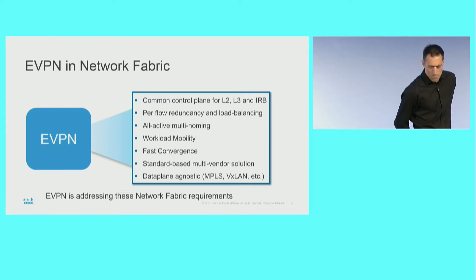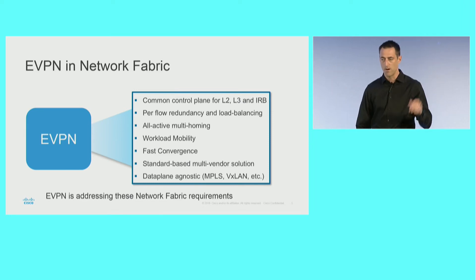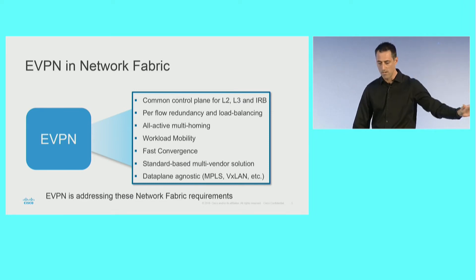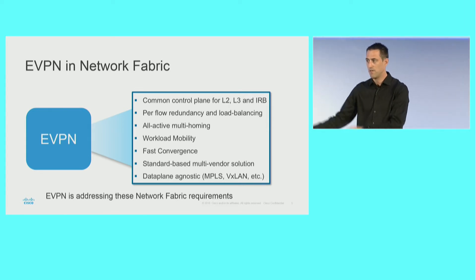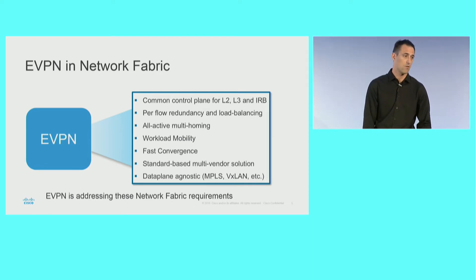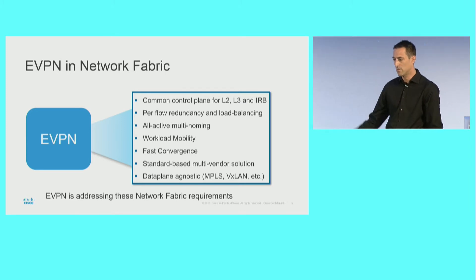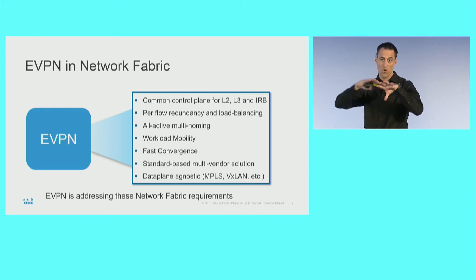So basically, EVPN is what? We have the common control plane — L2, L3, IRB. We have multi-homing now. We can use it for workload mobility, seamless VM motion. The fast convergence. It's also standards-based, IETF, and totally agnostic of your underlay. So VXLAN, the MPLS story, SR, SRv6 — EVPN can work over all of that.